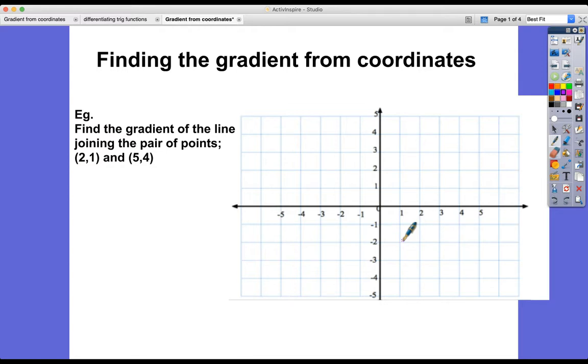Now for this first example, I'm going to draw and show that on the grid. I'm going to show you exactly what I'm talking about here. So (2,1) is along the corridor 2, up the stairs 1, that's there. And (5,4) is along the corridor 5, up the stairs 4, is there. So it's the line joining those pairs of points, that pair of points.